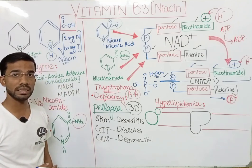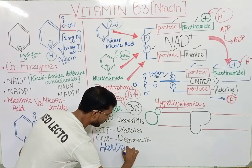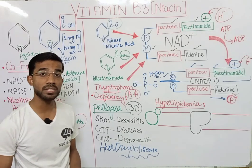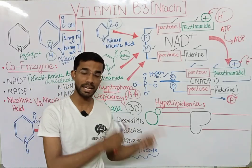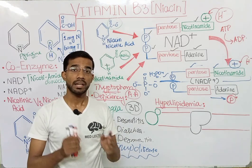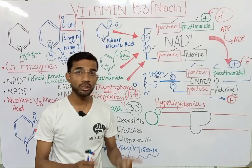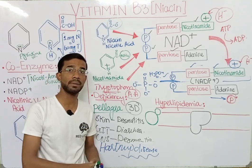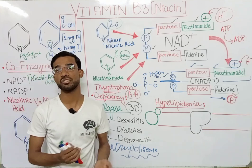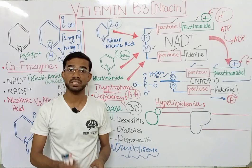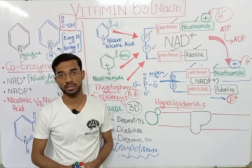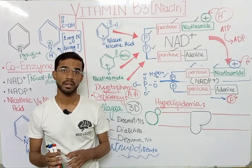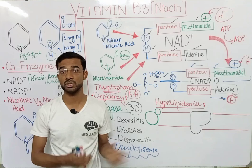You can also see deficiency of the niacin in a disease called Hartnup disease. It is actually a genetic disorder in which you will see a defect of the transporter in the intestine and the kidney, which is involved in the transport of different amino acids. When you will see Hartnup disease, the transport of tryptophan from the intestine into the blood will be blocked, and ultimately you will see deficiency of different amino acids in the body. Due to the deficiency of these amino acids, you will see different symptoms, and amino acids are actually excreted and lost from the body due to this disease.